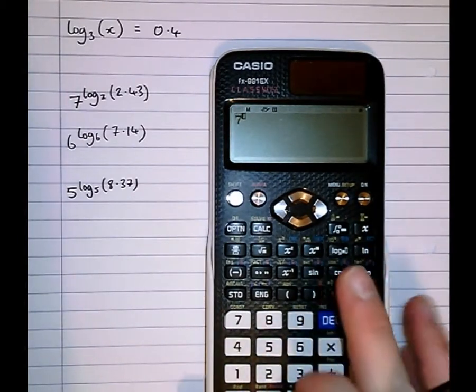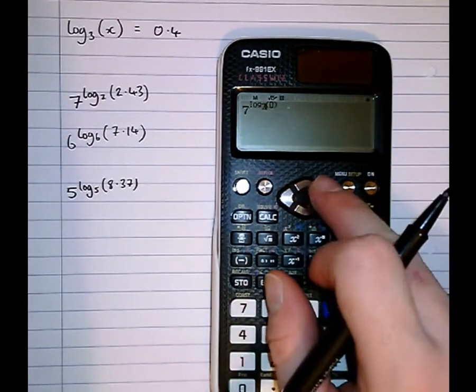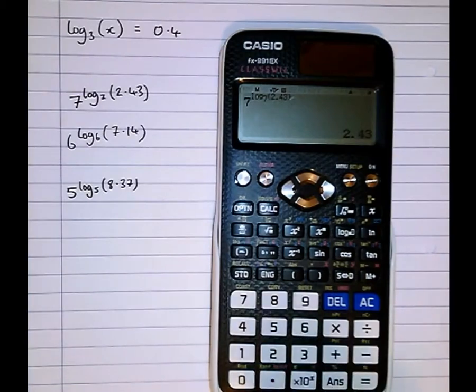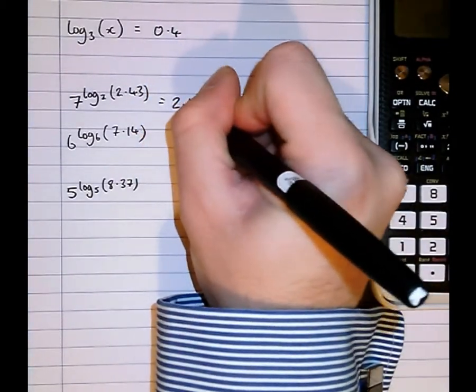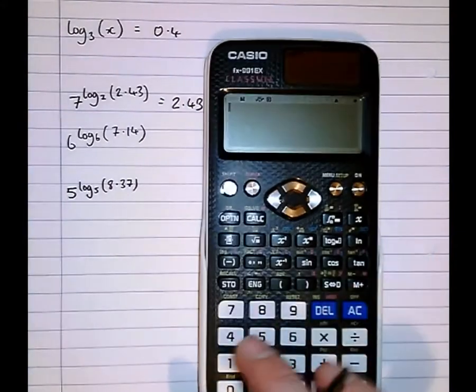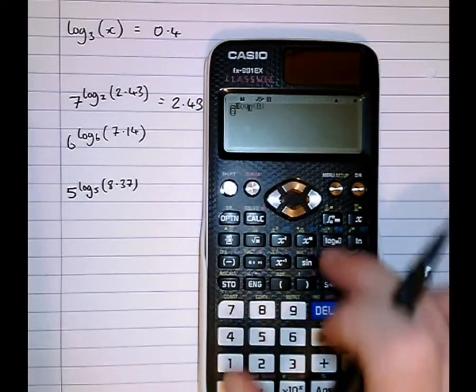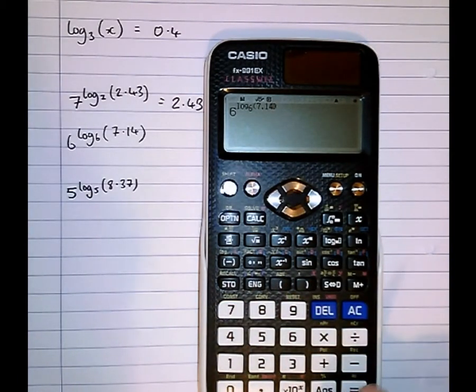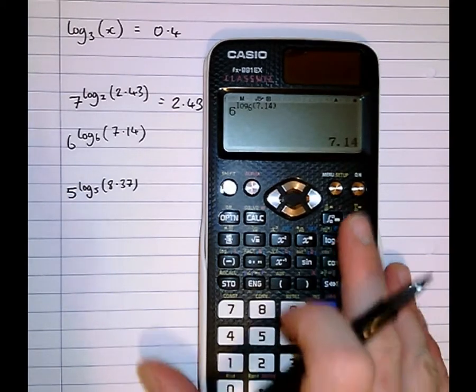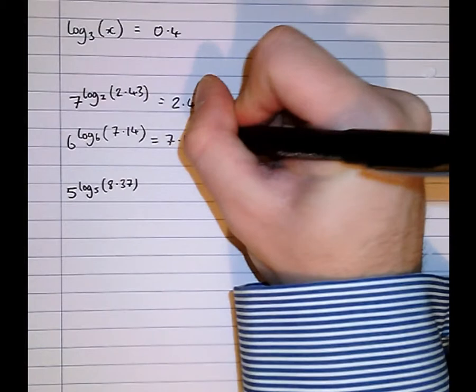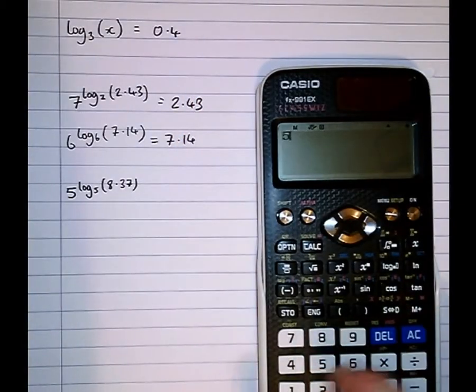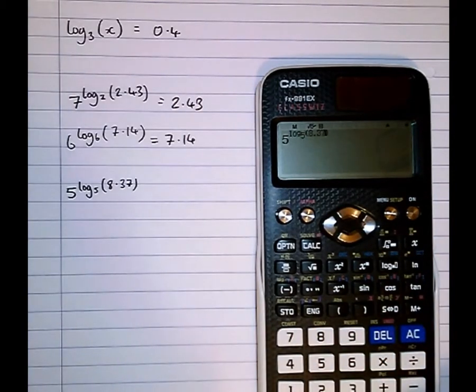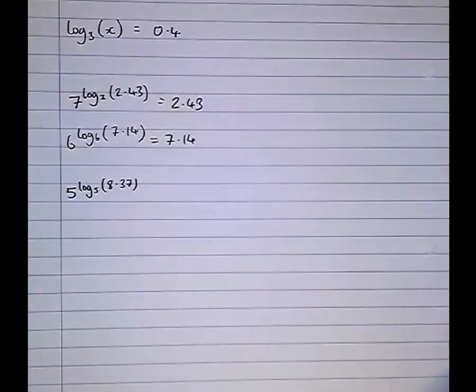So let's type these in the calculator. 7 to the power of log to the base 7 of 2.43 gives that number there which is 2.43. 6 to the power of log to the base 6 of 7.14, I'm sure you can see where this is going, equals 7.14. 5 to the power of log to the base 5 of 8.37 equals 8.37.